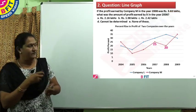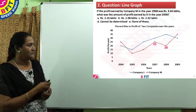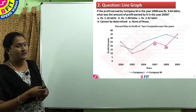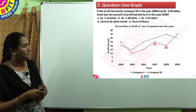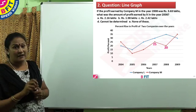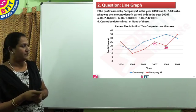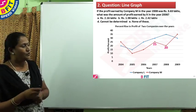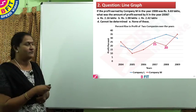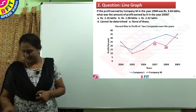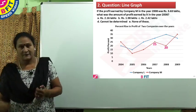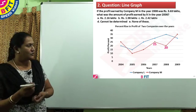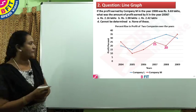Here we have the working slide. We are asked to find the 2006 profit, and 2008 profit is given as Rs. 3.63. So what will be the working? We will take the exact 2006 profit as X.